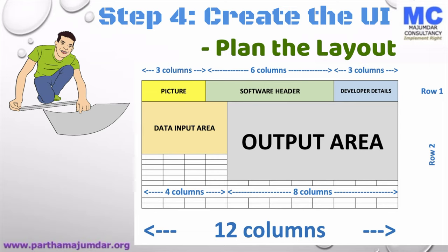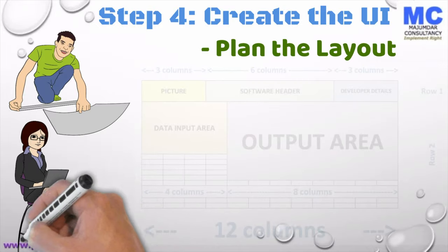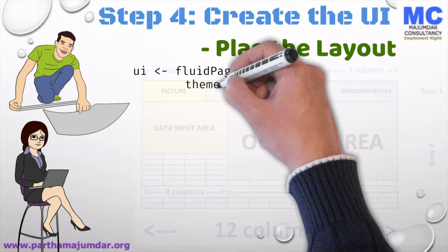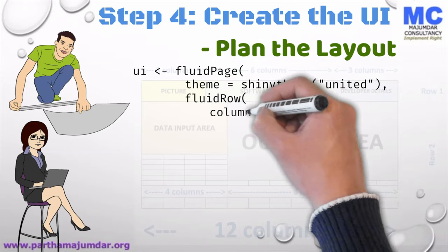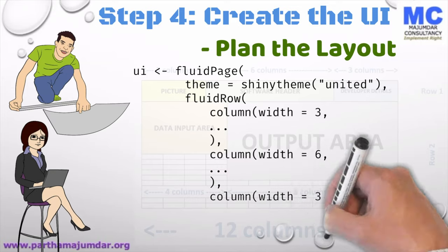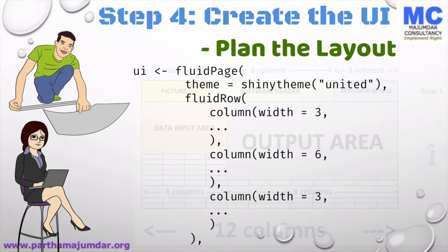You will notice that inside any of the sections, we can enter any number of rows of information. Now let's write the code for this layout. We will use a fluid page and we will use a theme called United. Within this, we will use a fluid row which will have three columns. This will create row number one in our layout. Please notice the syntax for fluid row. We need to give fluidRow and in this function, we specify the column with a parameter width. We have given width equal to three, six, and three respectively. Within each column, we can place any number of controls.